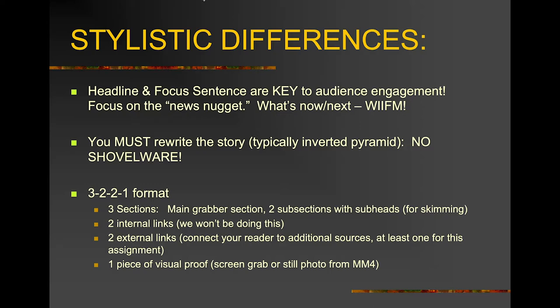External links connect your reader to additional sources or sources you looked at to help craft the story. For the assignment this week, you need to have at least one external link. For example, if you were using DHEC data to tell your story, you would want to link to that particular website so people could see the data you were referring to. And then of course you need a piece of visual proof — this can be either a screen grab or a still photo from your Multimedia 4 project. So MM5 is taking your MM4 assignment and turning it into a Word document reformatted for the web reading audience.